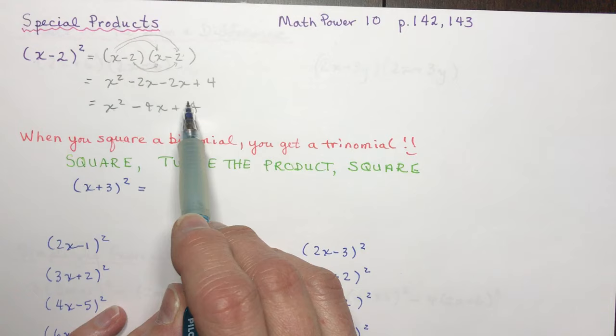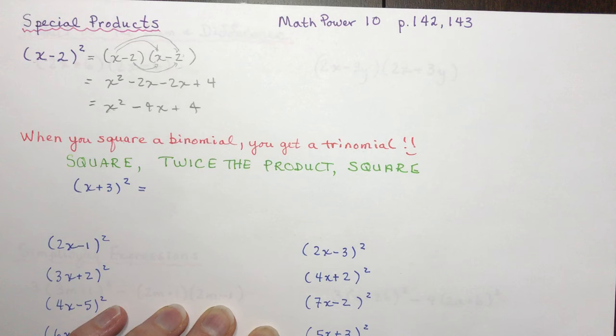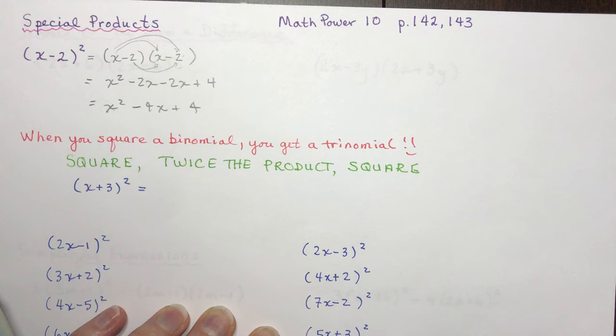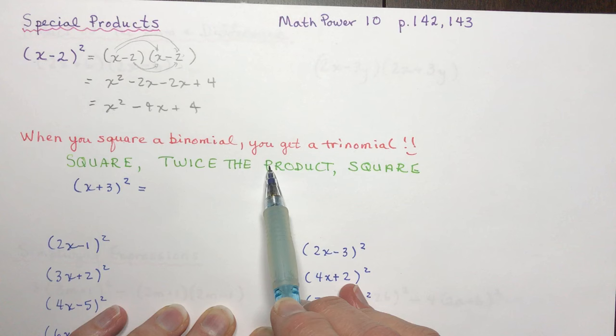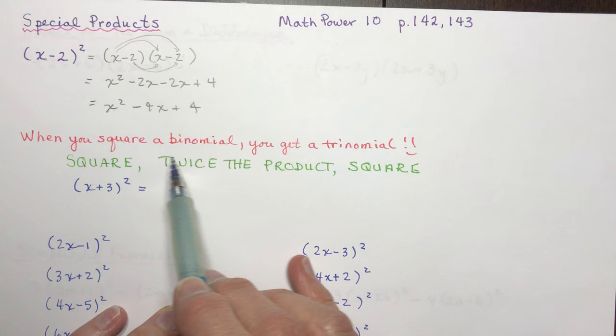Here's a saying I want you to memorize and keep in your brain forever — I learned it in high school, and math really doesn't change over time. The three little things are: square, twice the product, square. Let's talk about what that means.